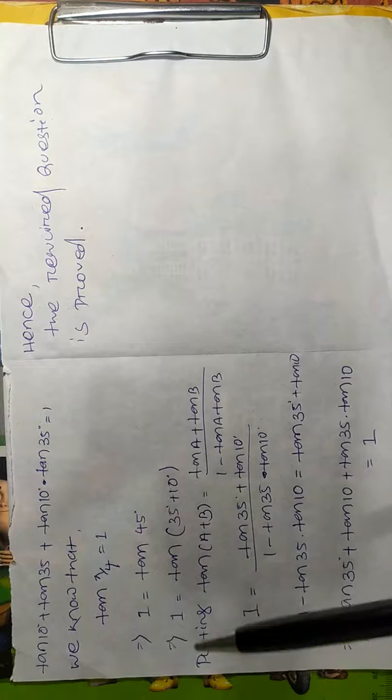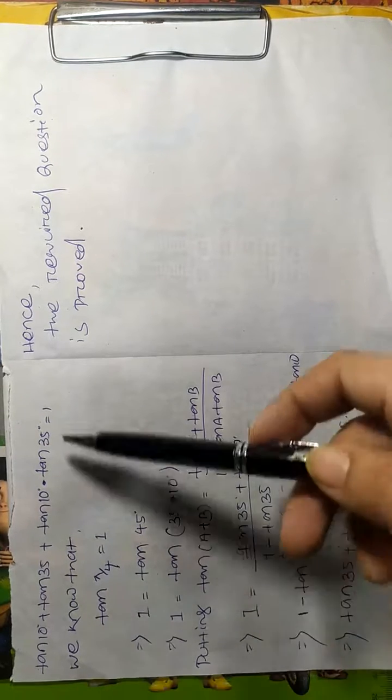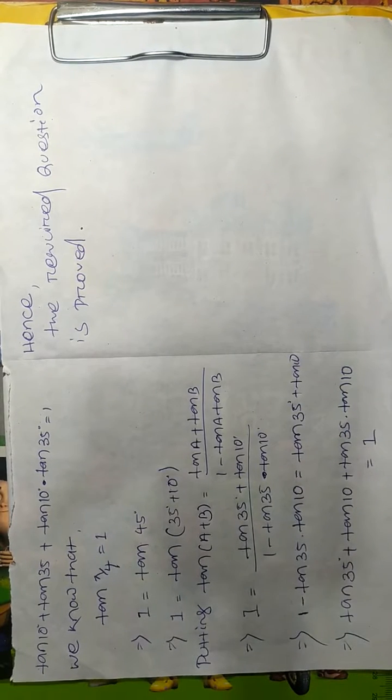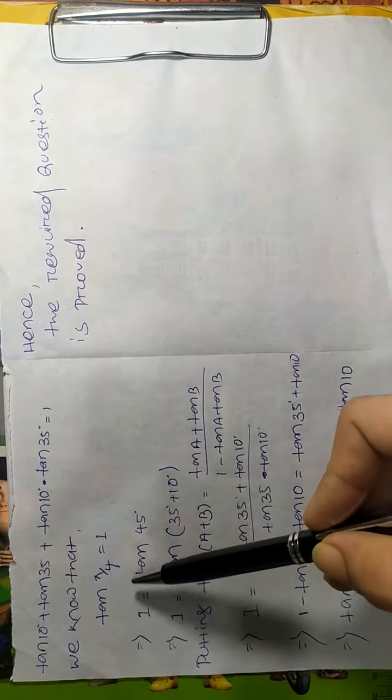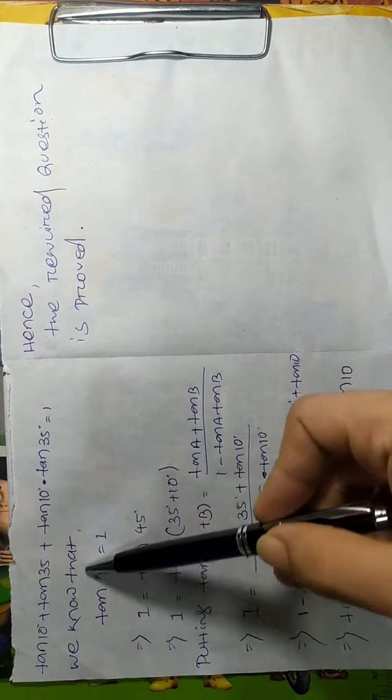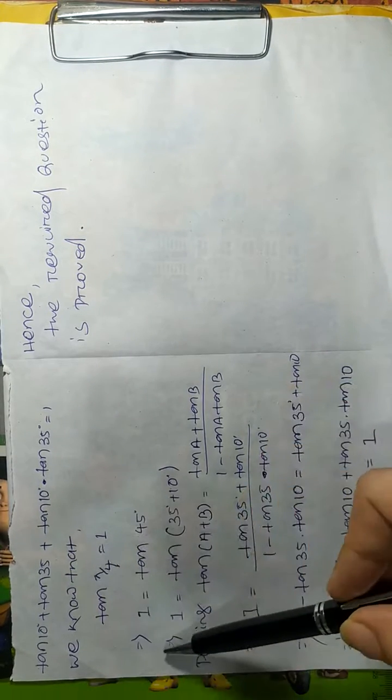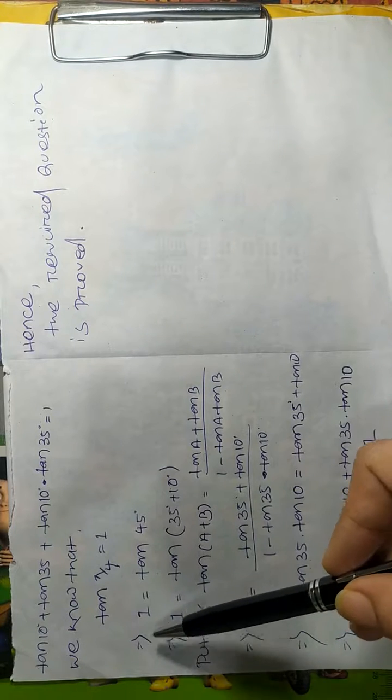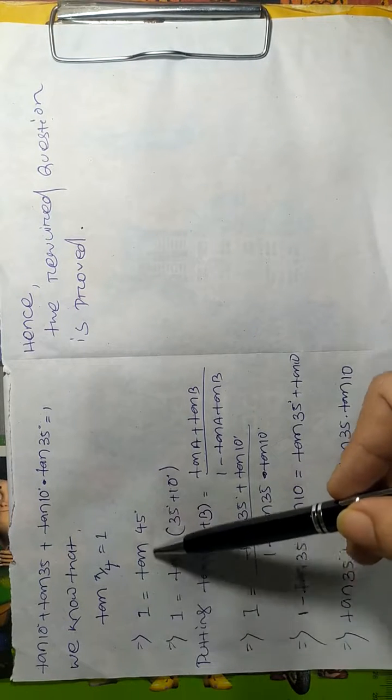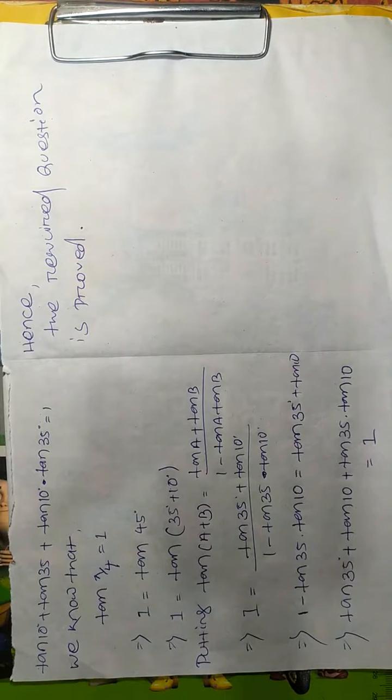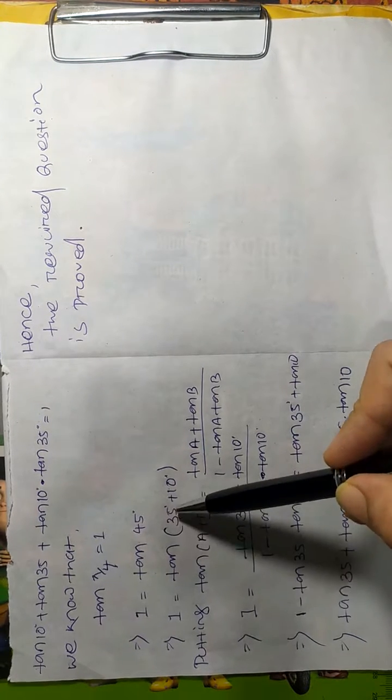To solve this problem, we have to know that tan π/4 value is 1. When we write 1 = tan 45°, tan 45° is converted into 35° + 10°, which is exactly 45°.